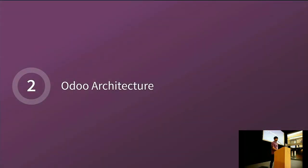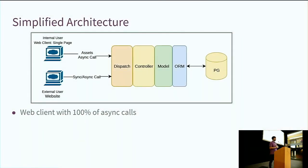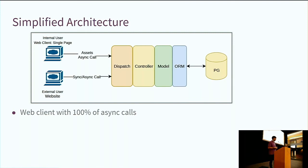About the Odoo architecture: we have two kinds of users. We have the internal user that uses the web client, and the web client is a single-page application. All calls to the server are asynchronous, so you won't see anything in your address bar. The external user on the website can make asynchronous or synchronous calls — it depends. Everything is handled by a dispatcher that will dispatch to the right controller. The controller uses a model, and the model uses the ORM to talk to Postgres. So if you are a back-end developer working with the web client, you have 100% asynchronous calls and you don't see anything in the address bar.